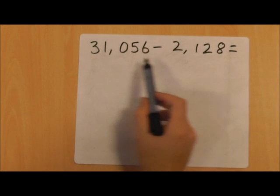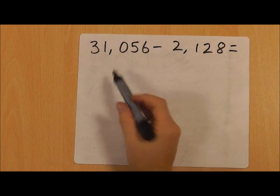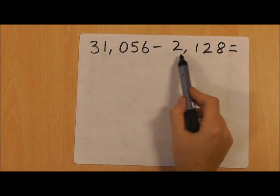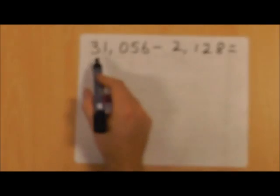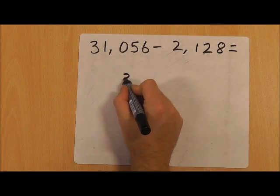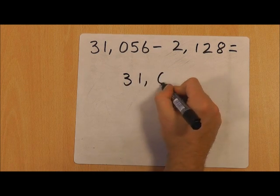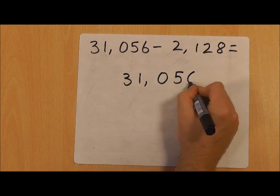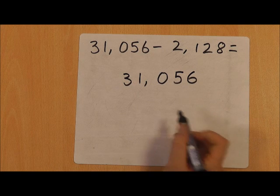Now we're going to look at how we can use column subtraction to subtract a larger number from a smaller number where we might need to do some exchanging. As with column addition, we need to line both of our numbers up to begin with so that they are in the correct place value columns.